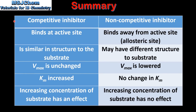Let's end with a summary. A competitive inhibitor binds at the active site; a non-competitive inhibitor binds away from the active site. A competitive inhibitor is similar in structure to the substrate, whereas a non-competitive inhibitor may have a different structure to the substrate. With a competitive inhibitor the value of Vmax is unchanged and the value of Km is increased. With a non-competitive inhibitor the value of Vmax is lowered and there is no change in the value of Km. Increasing the concentration of substrate has an effect with a competitive inhibitor, but with a non-competitive inhibitor increasing concentration of the substrate has no effect.